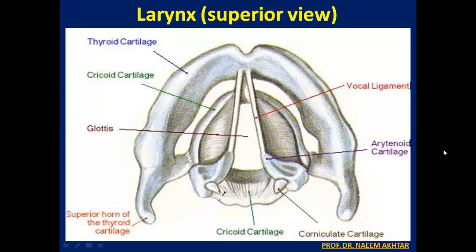This sphere view of the larynx shows the thyroid cartilage above and the cricoid cartilage below. The vocal ligament is present within the vocal cords, and this is the arytenoid cartilage.